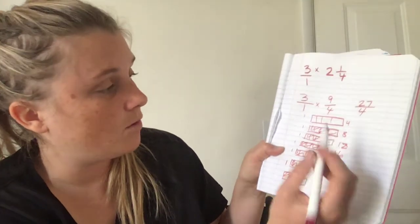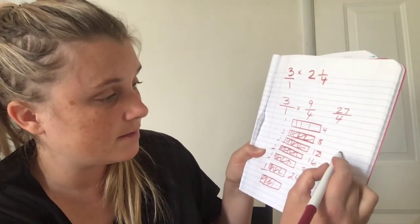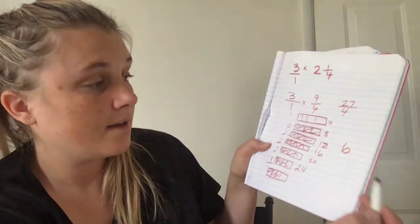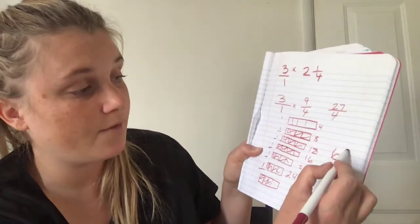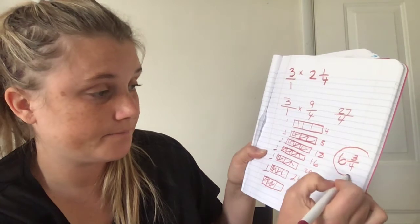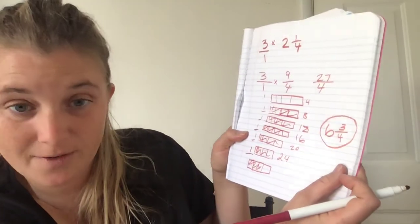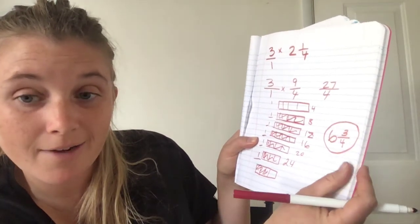So, I've got how many holes? One, two, three, four, five, six. I've got six holes. And then what? One, two, three, three-fourths. So, my answer is six and three-fourths. Can I simplify the three-fourths down anymore? No, I can't. So, your answer is six and three-fourths.